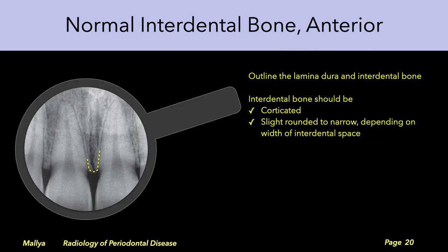The appearance of the interdental bone in the anterior region is similar. The interdental bone should be corticated and the cortical border is continuous with the adjacent lamina dura. However, unlike in the posterior region where the interdental bone is flat, the interdental bone in the anterior region is slightly rounded to narrow depending on the width of the interdental space. Similar to the posterior region, the interdental bone lies 0.5 to 2 mm below the line connecting the CEJs of the adjacent teeth.